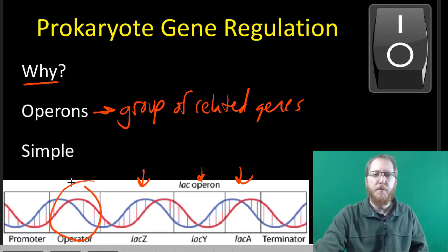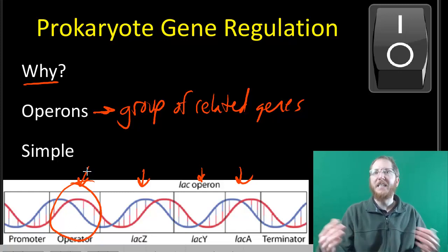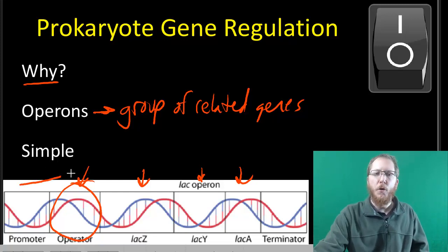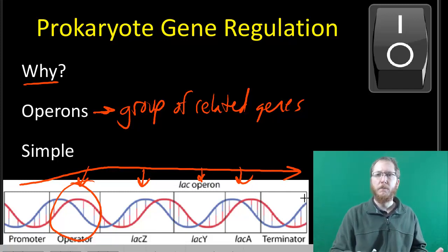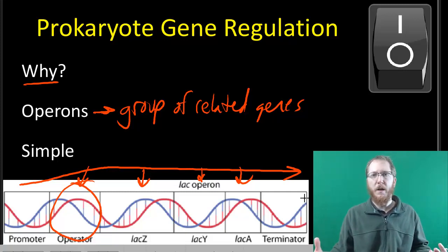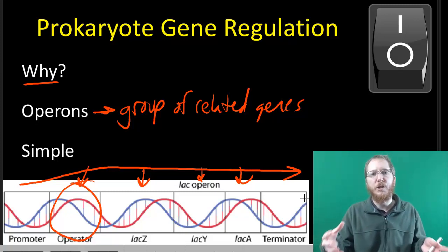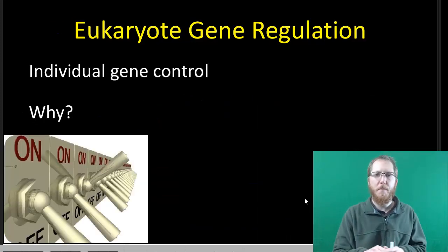There's a promoter and an operator at the beginning. The operator is a regulatory sequence — if there's no repressor bound, or if there's an activator bound, RNA polymerase can bind and transcribe the entire section, so all the genes. The genes are either all on or all off. Prokaryotes can have many different operons, each consisting of a group of related genes, getting the job done in the simplest way possible.